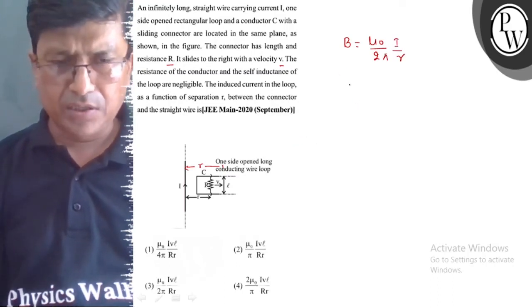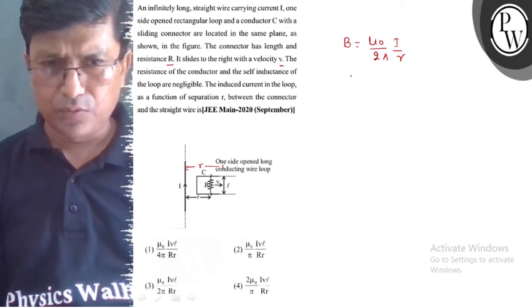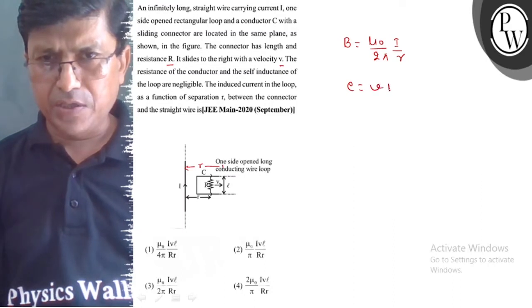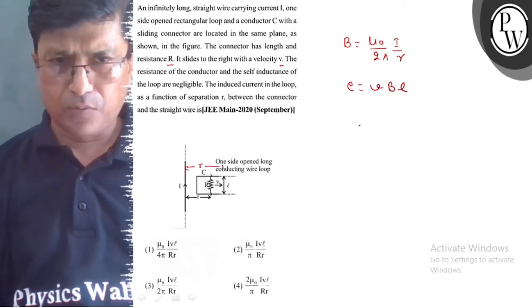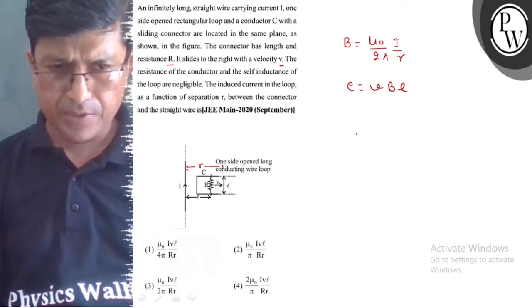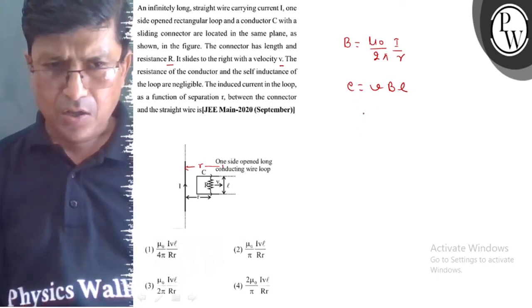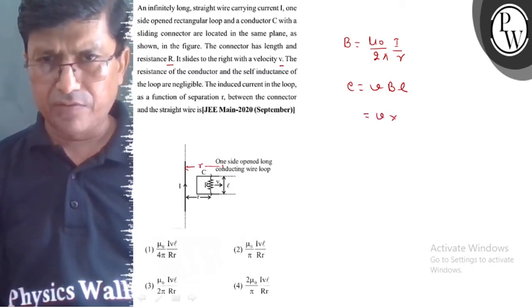Now, we know that induced EMF magnitude is equal to V times B times L. E is equal to the motional EMF. So we will put the values here.